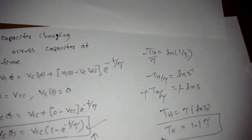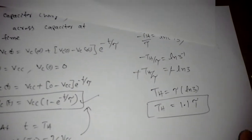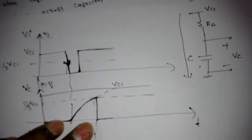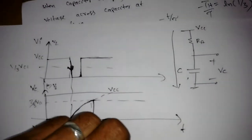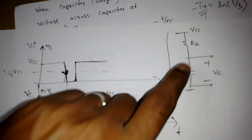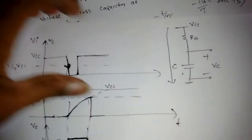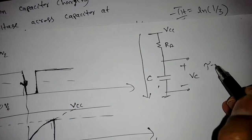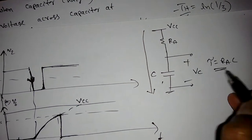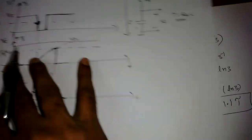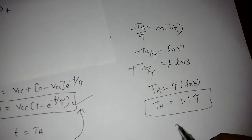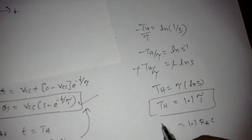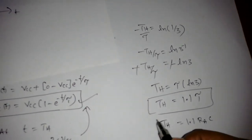ln(3) is approximately 1.1, so the pulse width is Th ≈ 1.1·τ. Since the capacitor charges through Ra and C, the time constant τ = Ra · C. Therefore, the pulse width is Th = 1.1 · Ra · C.